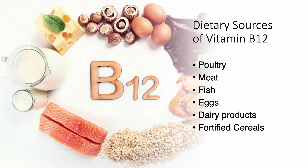You usually get B12 from animal sources, so there are not good vegetarian sources for B12 — it's found in meat, poultry, fish, eggs, and dairy products. However, cereals are fortified with B12 the same way as folic acid, so cereals are a potentially good source for both folic acid and B12.